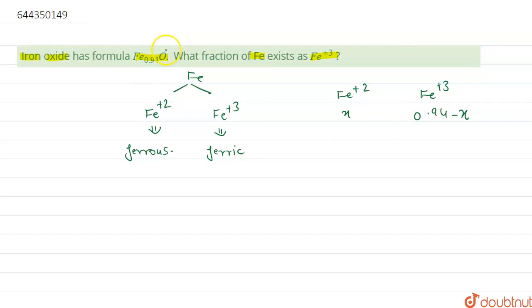We know that oxygen has minus 2 charge, so here iron has plus 2 charge. So we'll manage the charge. It has plus 2 charge, so plus 2 into x, plus there is plus 3 charge, plus 3 into 0.94 minus x.